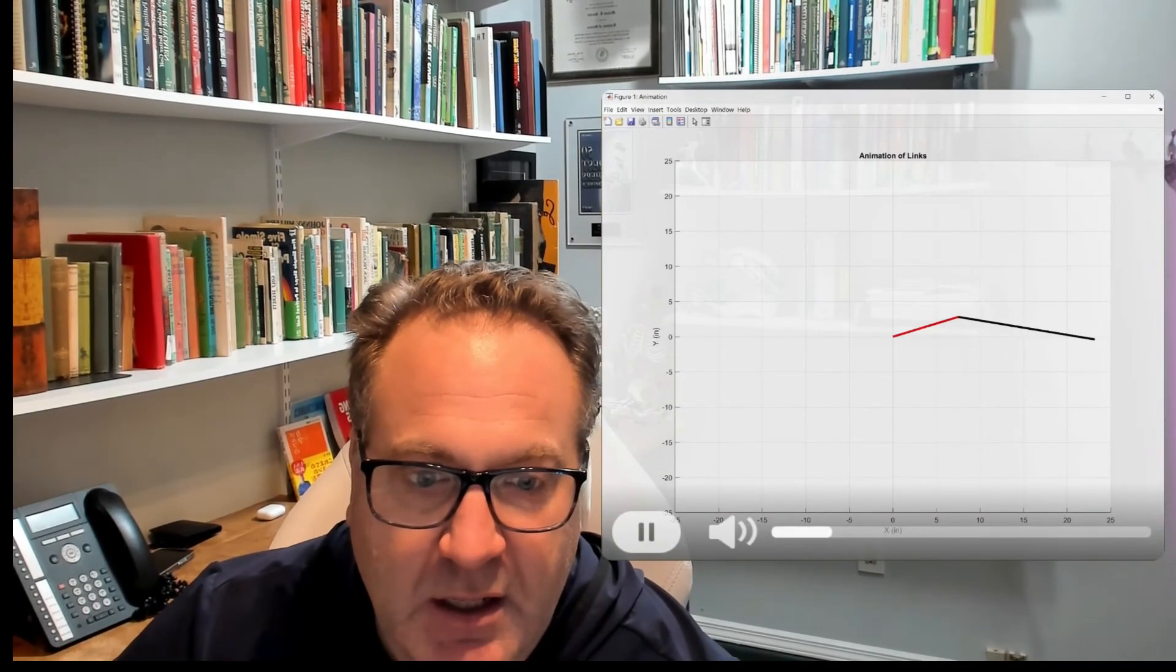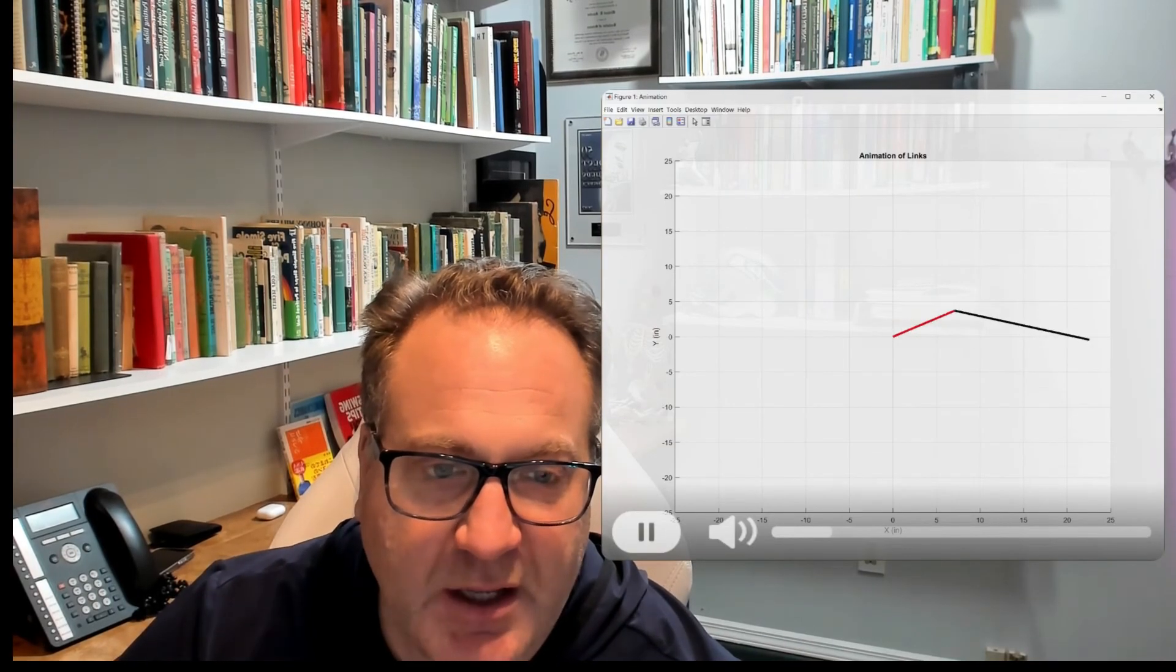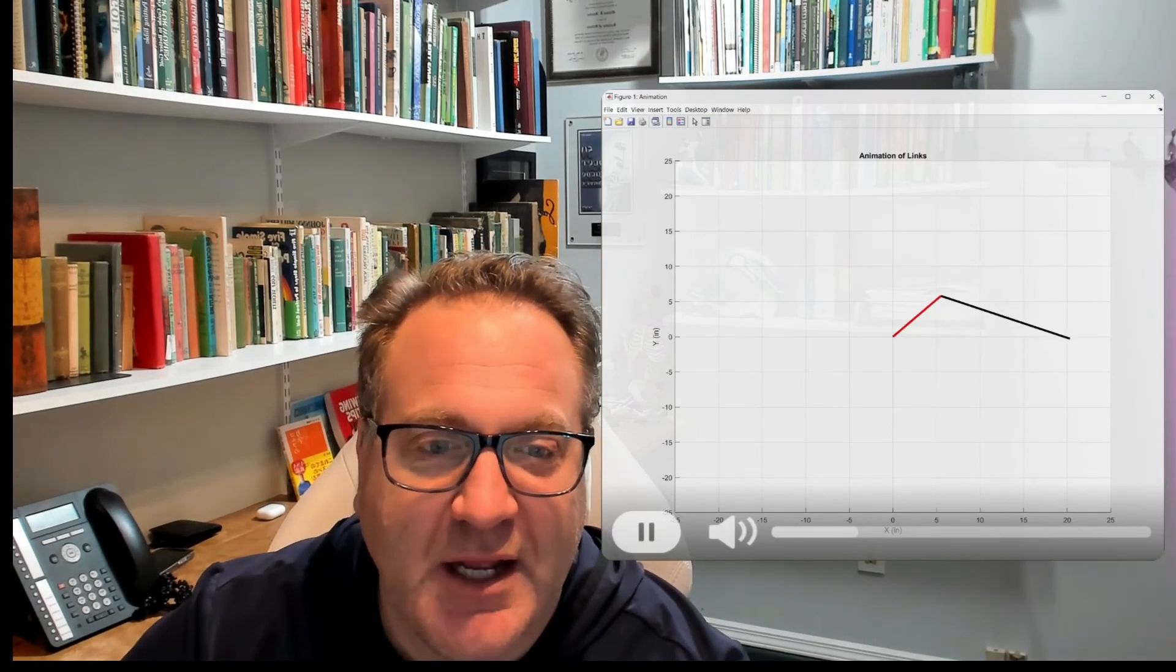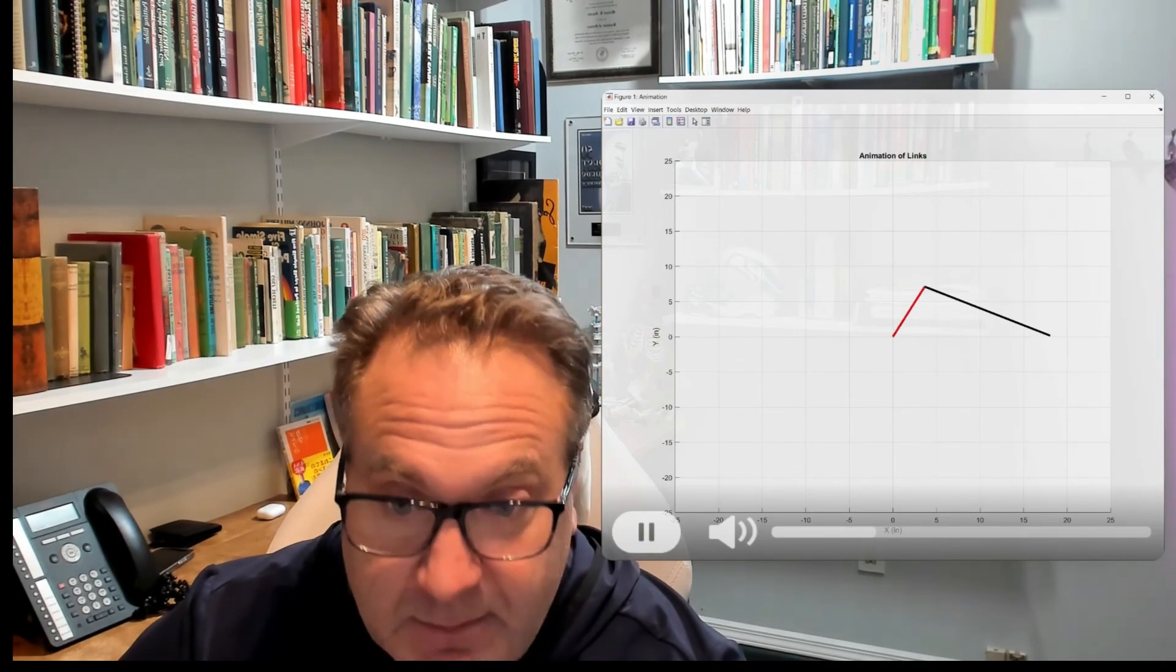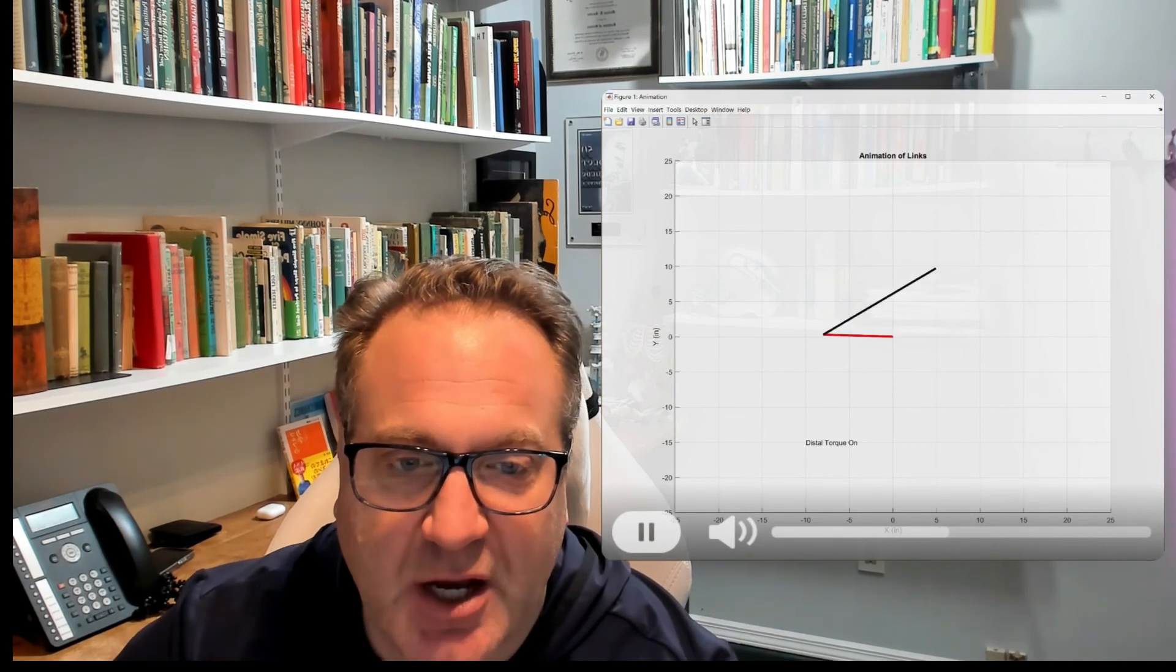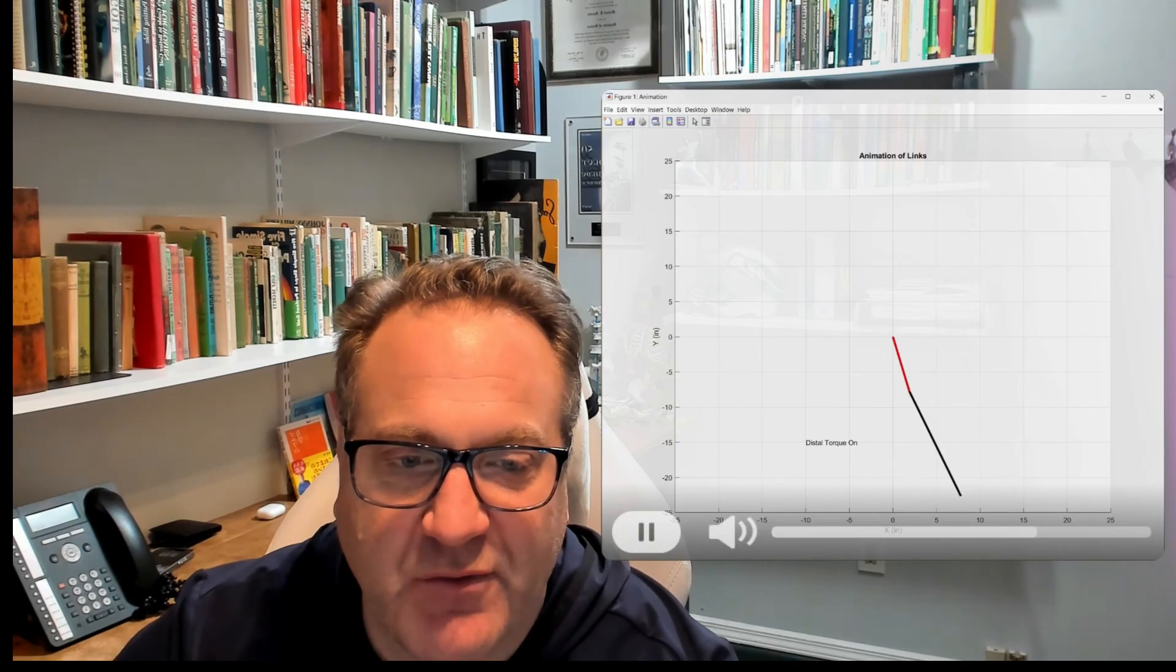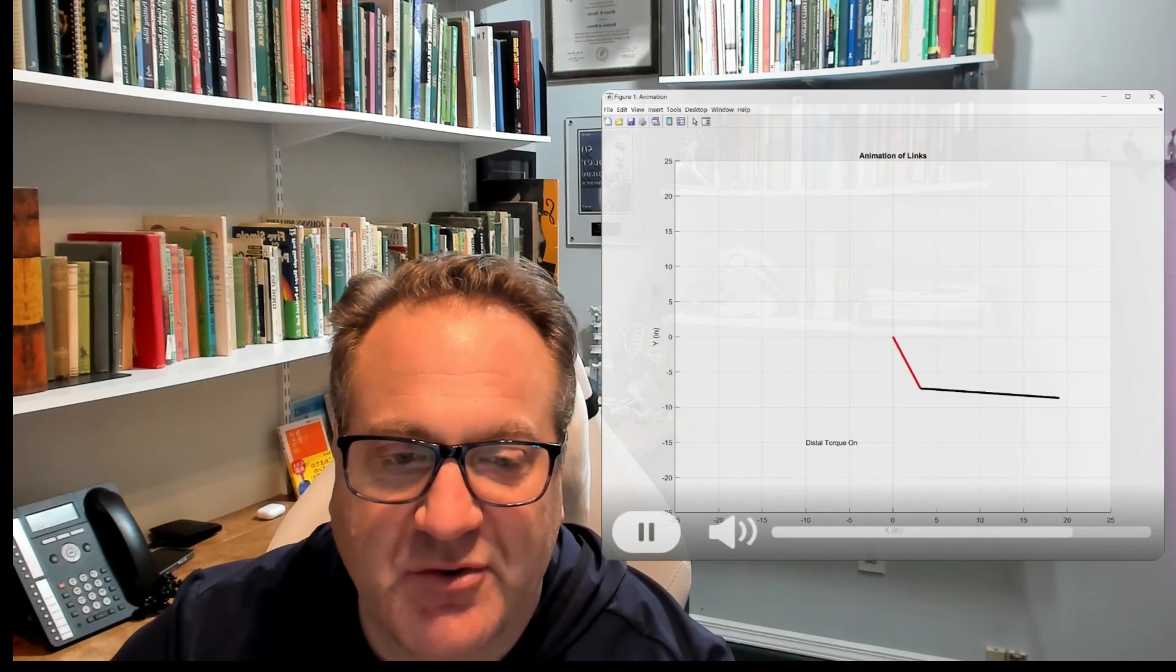So let's watch the simulation again. So you can see early on, there's that torque at the proximal link, the distal link of the club is rotating the other way. So its angular velocity was negative early on. And then you can see it's being pulled along a little bit by the proximal link. Now we turn the distal torque on, and eventually it starts to catch up. And then as it swings out, there is a very interesting interaction force right here between that distal and proximal link.